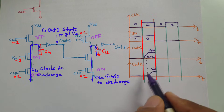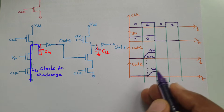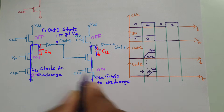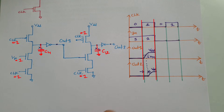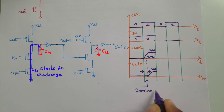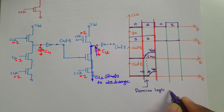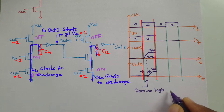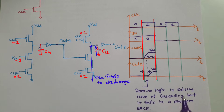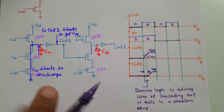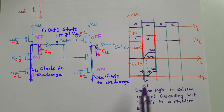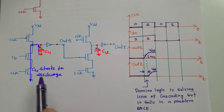Obviously there will be a delayed output. That delay will definitely be present, and with more cascading, the delay will increase. So there can be a race problem. Domino Logic CMOS avoids the cascading issue of Dynamic CMOS, but it falls into a problem of race. This race problem means output delay will be present, and with more cascading, you may not complete the evaluation phase in time.